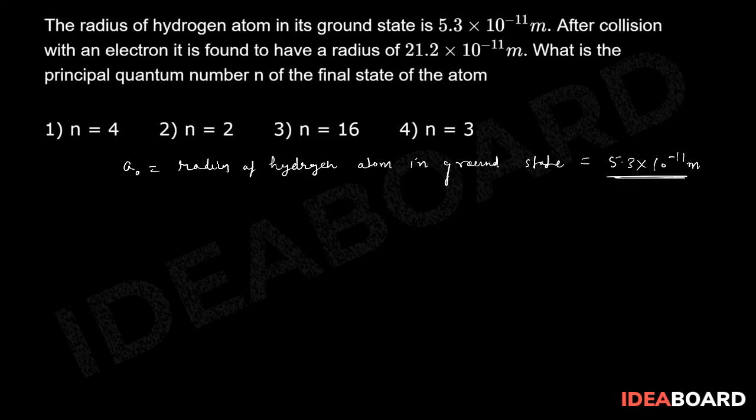After collision, it is found that the radius is going to be, so this will be rₙ, say radius of hydrogen atom in nth state. In nth state we know that is given by a₀ × n²/z.